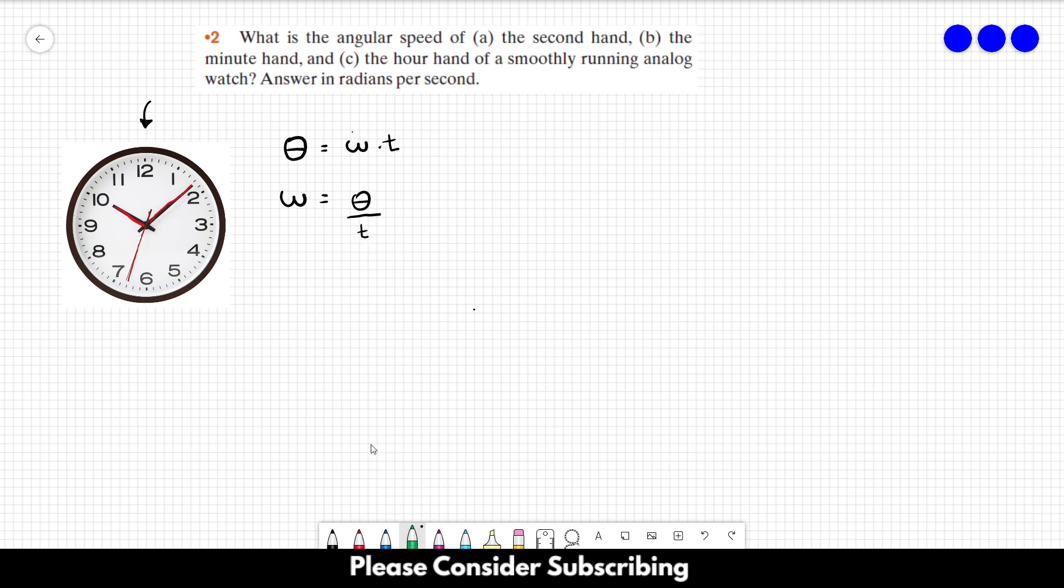The second thing you must know is that 360 degrees, a full circle, is equal to 2π radians. So those are the only two things you need to know to solve this problem.